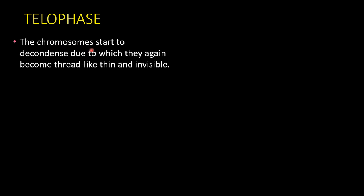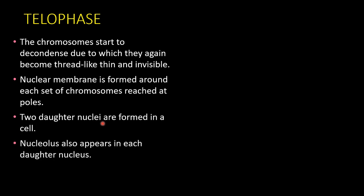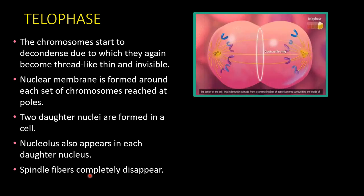The last phase of nuclear division is telophase. In telophase, the chromosomes start to decondense — they spread out and become thread-like, thin, and invisible. The nuclear membrane starts to form around each set of chromosomes as they reach the poles, and hence two daughter nuclei are formed in the cell. The nucleolus also appears in each daughter nucleus, and the spindle fibers completely disappear.